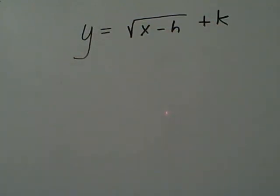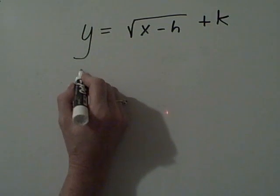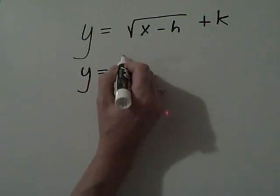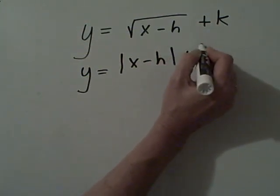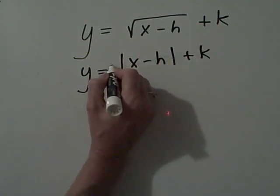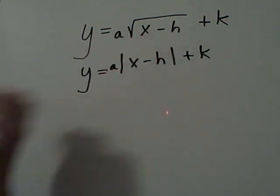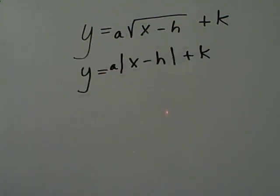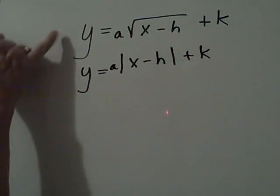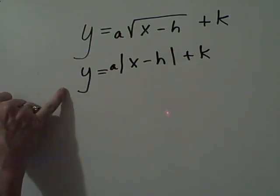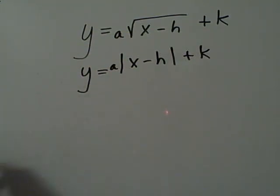This might look familiar to you because if you remember correctly when we did absolute value it was y equals the absolute value of x minus h plus k. And then sometimes we would see an a in the front. The value in the front, if you remember correctly, was the steepness. Notice these are exactly the same. So you're not really learning anything new.